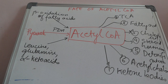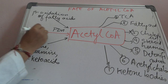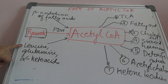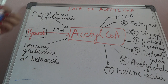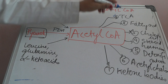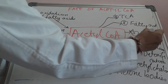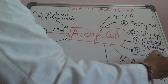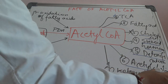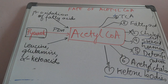So pantothenic acid, or vitamin B5, forms CoA, which helps in the formation of acetyl-CoA from pyruvate via pyruvate dehydrogenase. It can also be formed from leucine, glutamine, alpha-keto acids, or beta-oxidation of fatty acids. Acetyl-CoA takes part in seven pathways: the tricarboxylic acid cycle, fatty acid synthesis, cholesterol synthesis, steroid hormone synthesis, detoxification reactions, acetylcholine formation, and ketone body synthesis. Thus, acetyl-CoA is a very important molecule, and its formation through vitamin B5 or pantothenic acid is significant.